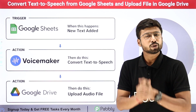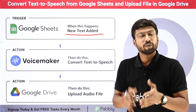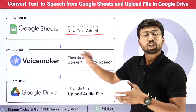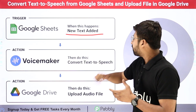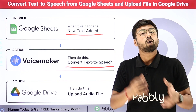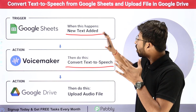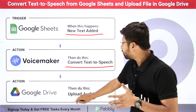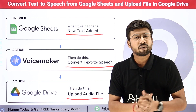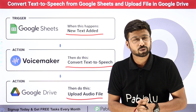In this automation, as we add some new text in our Google Spreadsheet as a new row with some details, automatically for the same text using Voicemaker, we are going to convert that text into speech and generate an audio file. After generating the audio file, we will automatically upload it to our Google Drive, and the link of that Google Drive file will be updated back in the same sheet in the same row.